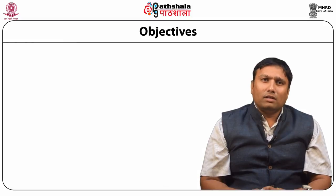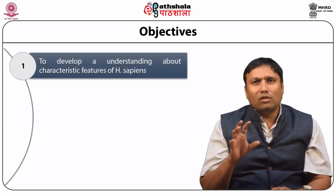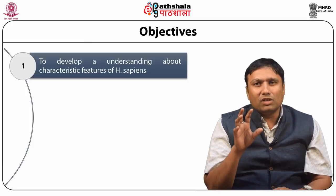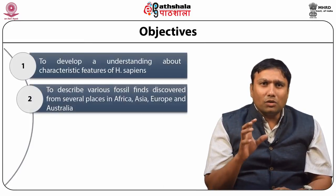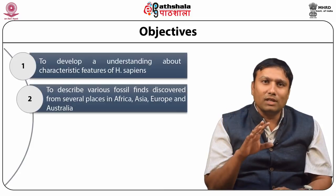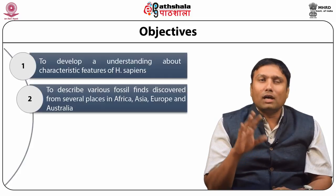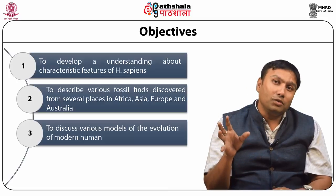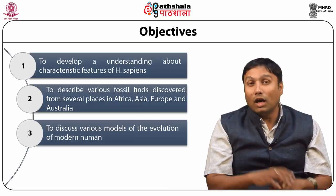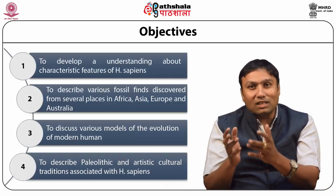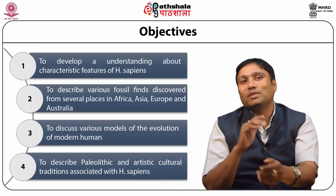Dear students, in this module we are going to develop and understand the characteristic features of Homo sapiens. We will also try to describe the various fossils discovered from several places in Africa, Asia, Europe, and Australia. We will also discuss various models of the evolution of modern humans and describe the Paleolithic and artistic cultural transition associated with Homo sapiens.